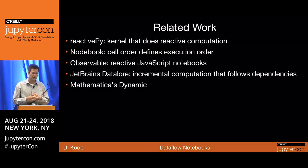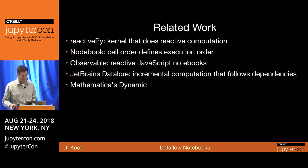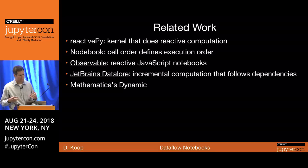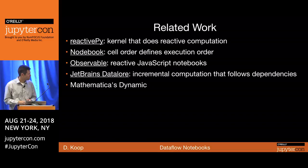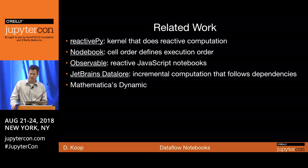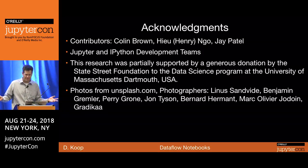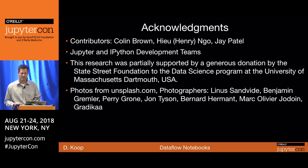We're not the only ones thinking about this. Related work includes ReactiPy — a kernel doing the same reactive computation that runs in JupyterLab without modifying the interface. NodeBook uses stronger restrictions on cell order to define execution order. Observable has cool reactive notebooks in the JavaScript world. JetBrains has a DataLore tool looking at incremental computation. And Mathematica has always been associated with notebook ideas and has a dynamic command with similar reactive functionality. The extensibility of Jupyter and IPython's code and documentation is what makes trying out these sorts of things possible.